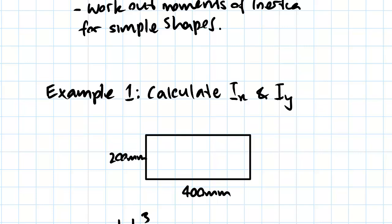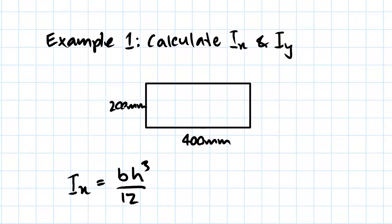If we look at the formula that we had in the previous video, we have Ix is equal to bh cubed on 12. And b is this 400 because it's the breadth, and h is this 200 because it's the height.